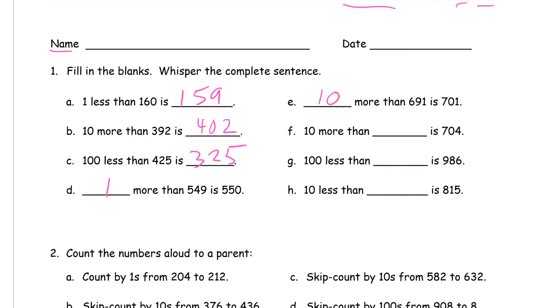10 more than 691 is 701. 10 more than 694 is 704. 100 less than 1086 is 986. 10 less than 825 is 815.